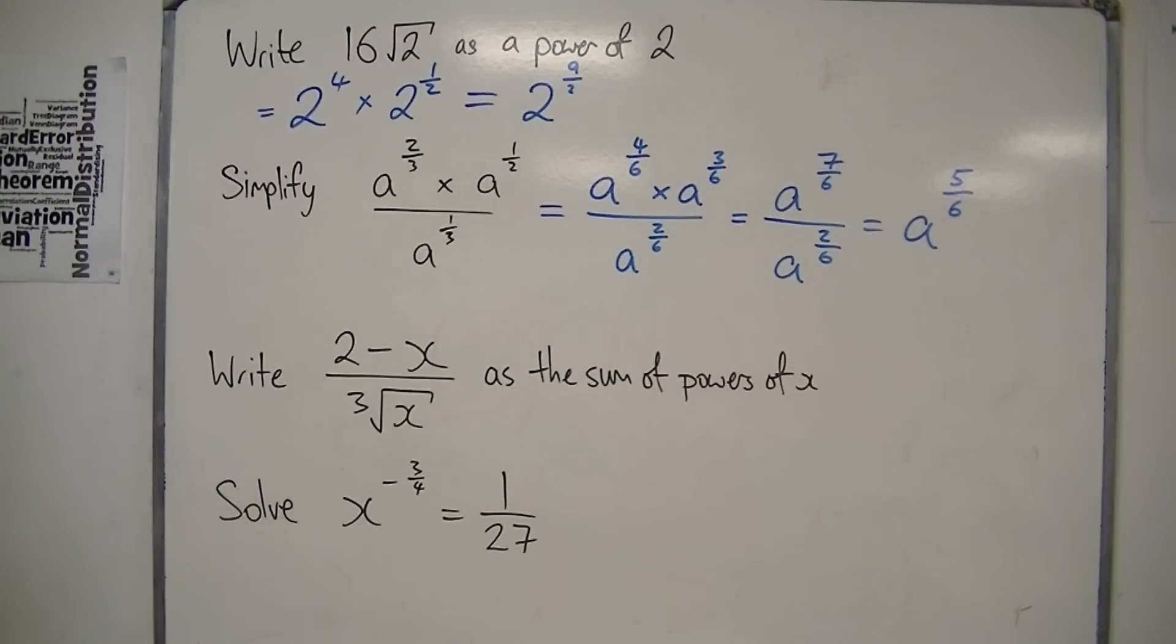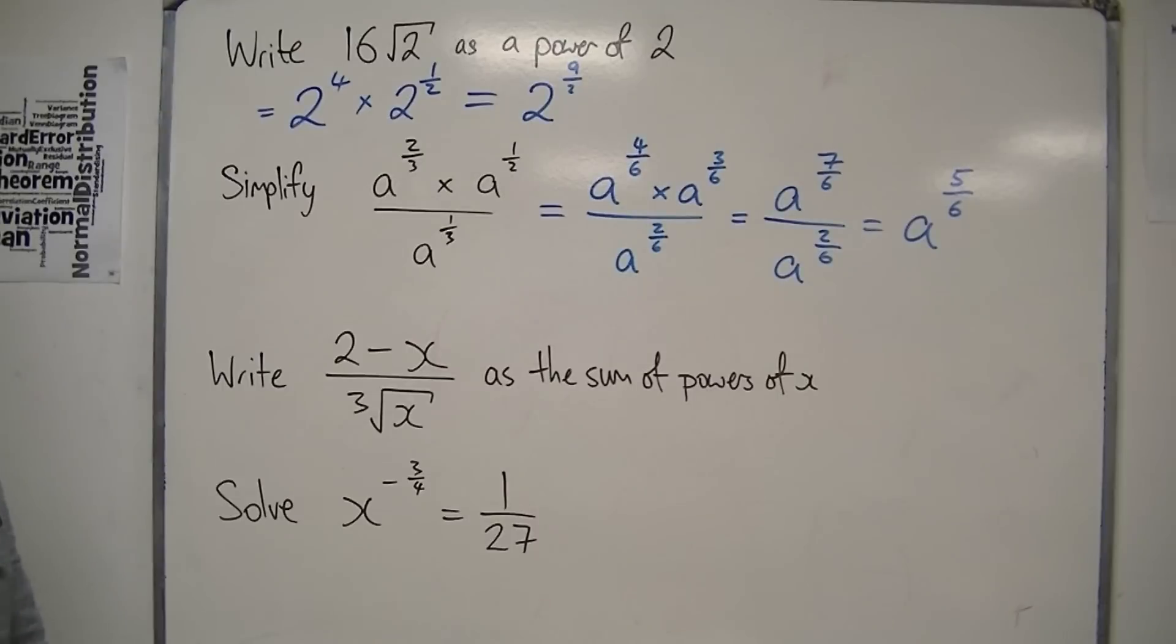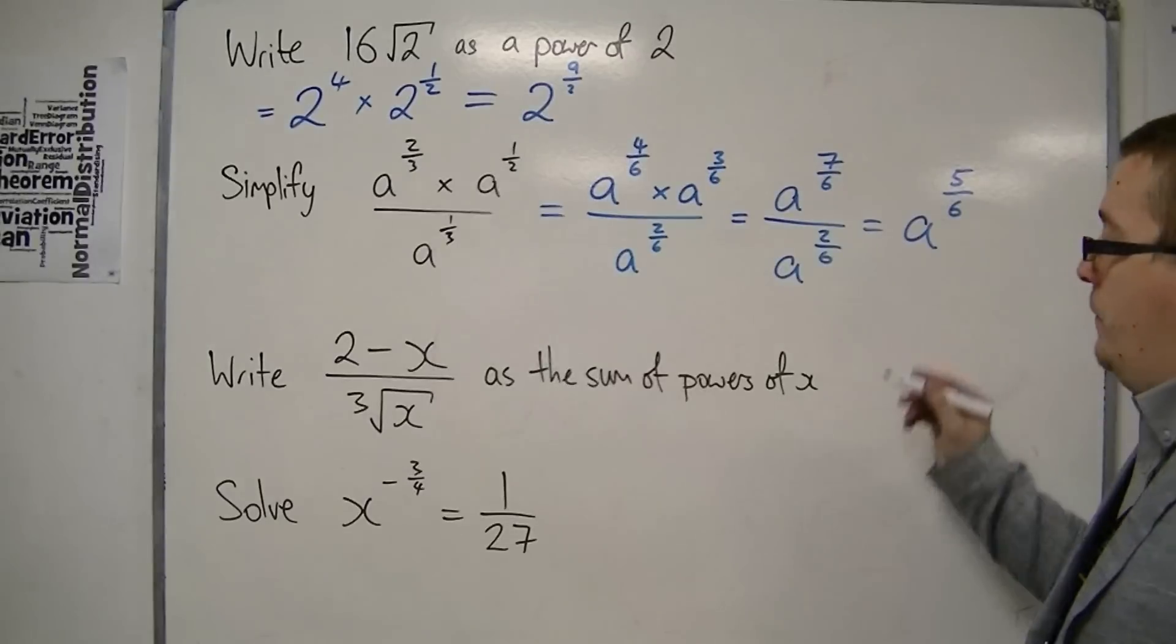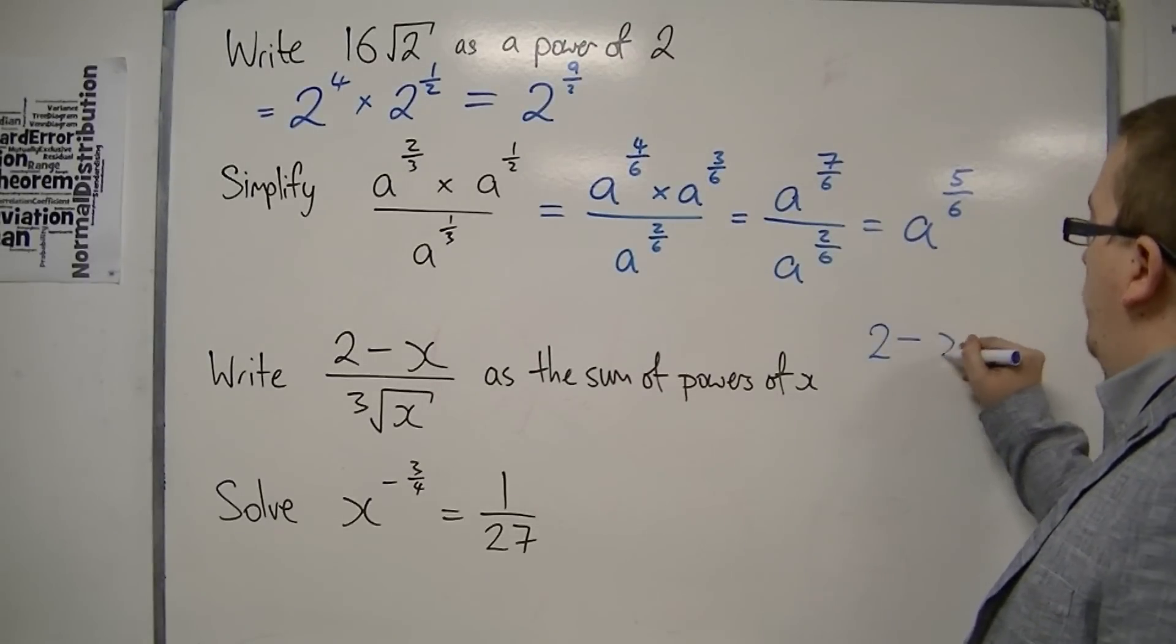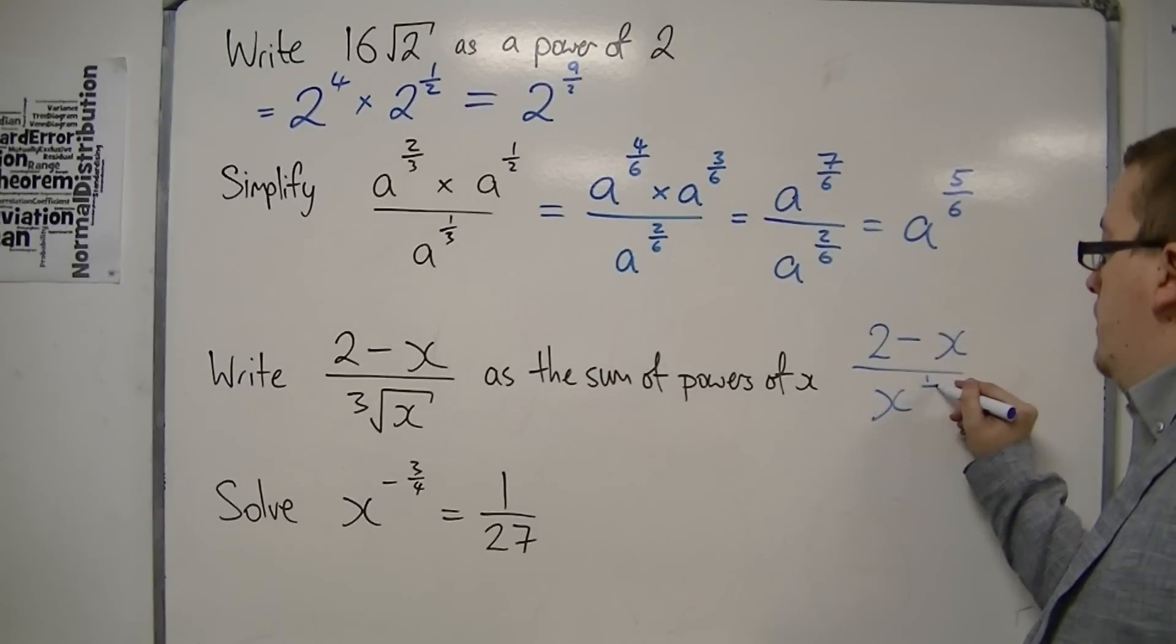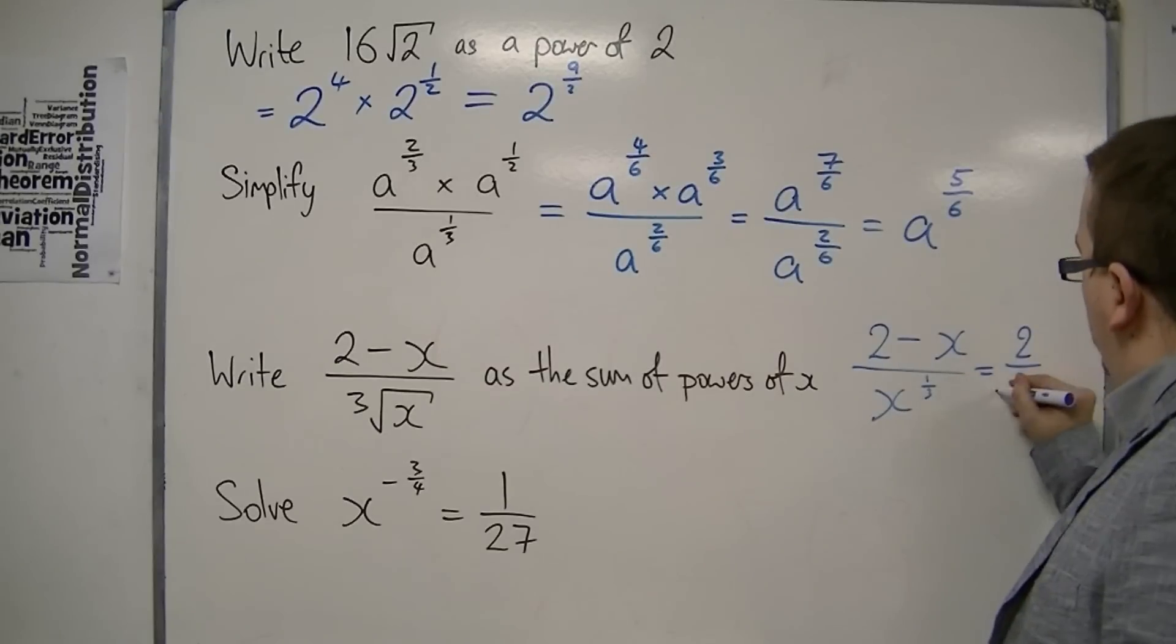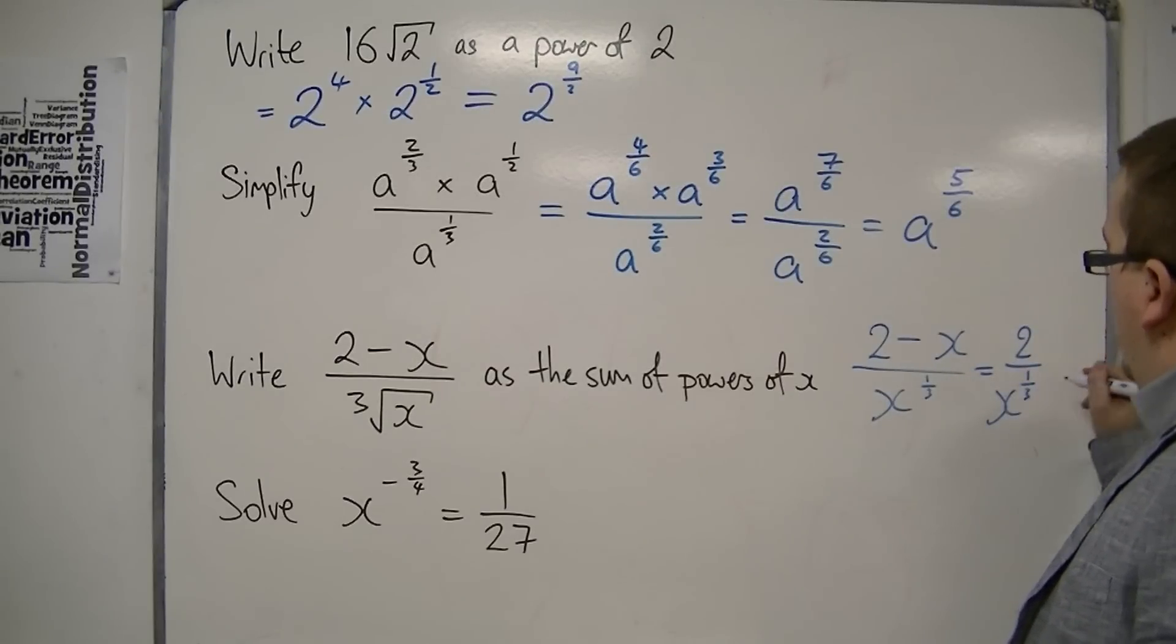The next one, write 2 minus x all over the cube root of x as the sum of powers of x. So, what that means first is to write everything as a power of x. So, we've got 2 minus x over x to the 1/3. Then we've got 2 over x to the 1/3 take away x over x to the 1/3.